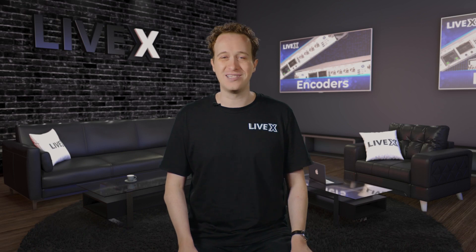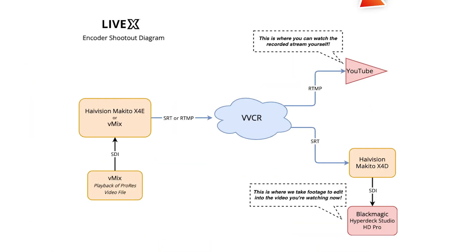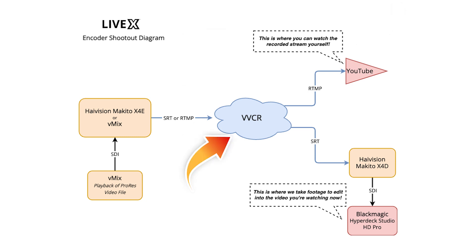Using the encoders, we stream this content to YouTube Live and archive the stream for your viewing. We use Virtual Video Control Room, or VVCR, our cloud video routing solution that you can try too, as a middle point between the encoder and YouTube.